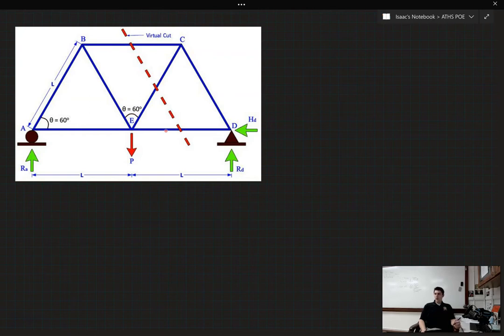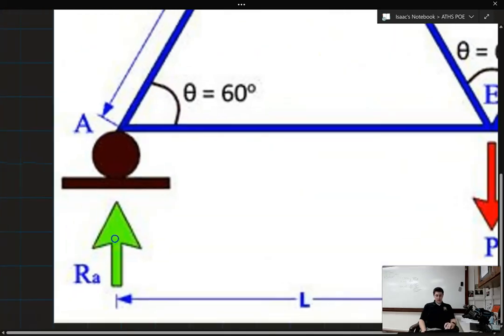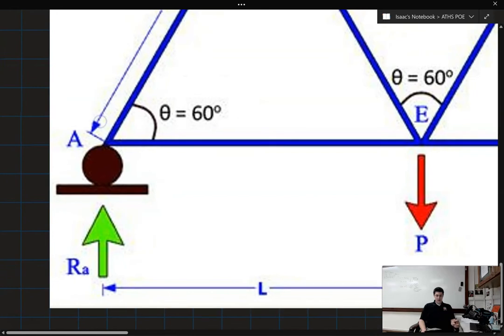So question one asks us to draw a free body diagram of the forces that are acting on point A. It says note that one force is already given, RA. It also says that there should be three forces. So I'm going to zoom in here so we can look at RA.